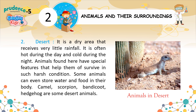Desert. It is a dry area that receives very little rainfall. It is often hot during the day and cold during the night. Animals found here have special features that help them survive in such harsh conditions. Some animals can even store water and food in their body. Camel, scorpion, bandicoot, and hedgehog are some desert animals.